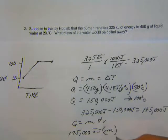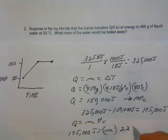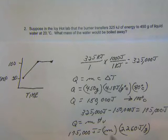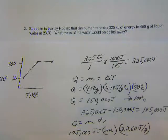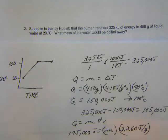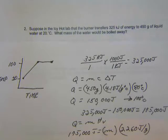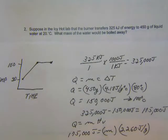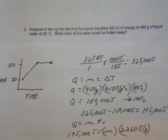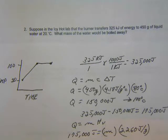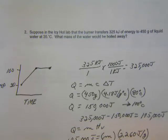We know Q equals mass times the heat of vaporization. We have 175,000 joules, we want to know what mass will boil away, and the heat of vaporization is 2,260 joules per gram. Doing the math, the mass that will be boiled away is approximately 77.4 grams. So out of the 450 grams, we can actually evaporate 77.4 grams.